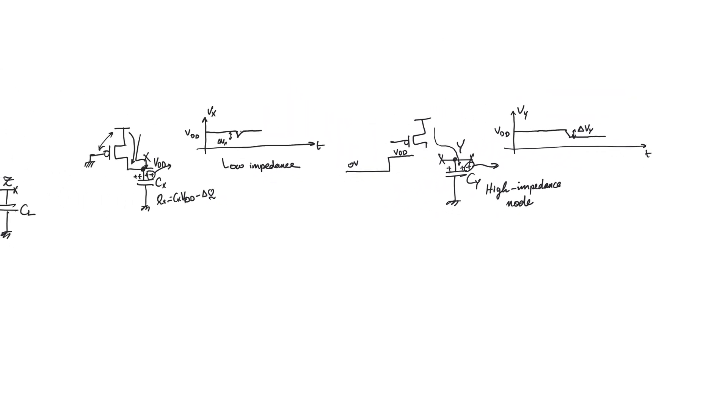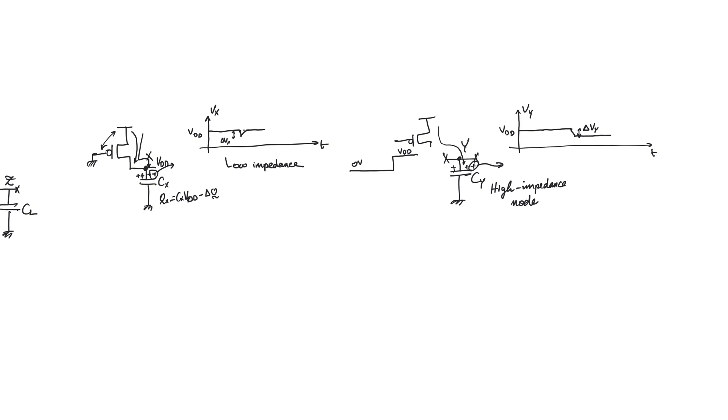So if we compare the two nodes, node X and node Y, in the absence of any non-idealities, in the absence of any sources of coupling, we will observe a supply voltage, a VDD on both nodes. However, the quality of the VDD on the two nodes is very different. On node X, we observe a VDD that is strong, that comes from a low impedance connection to supply. If there's any reduction in the value of the node, we can restore this by allowing current to flow through the PMOS to restore it back again.